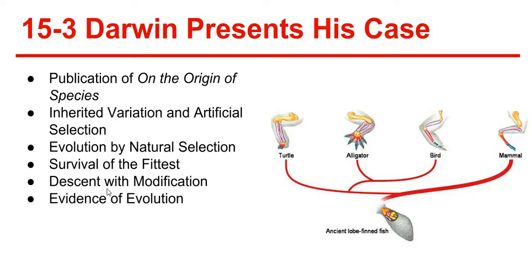And common descent: all species, living and extinct, were derived from common ancestors. Next, evidence of evolution. Darwin argued that living things have been evolving on Earth for millions of years. Evidence for this process could be found in the fossil record, the geographical distribution of living species, homologous structures of living organisms, and similarities in early development, or embryology. The fossil record: Darwin saw fossils as a record of the history of life on Earth, and by using fossils he could note similarities between ancient animals and modern ones.